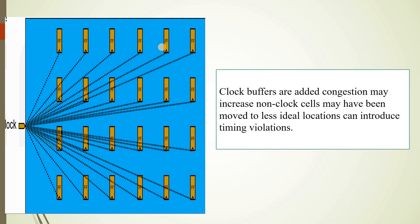For clock tree synthesis, H-trees or X-trees are generally used to maintain the required structure so that the clock reaches all elements at the same time. One effect of clock tree synthesis is that clock buffers are added, which may increase congestion. Non-clock cells may also be moved to less ideal locations, and timing violations can be introduced. The increase in congestion is because buffers or inverters are used during CTS.